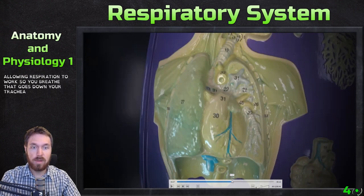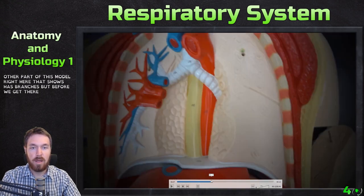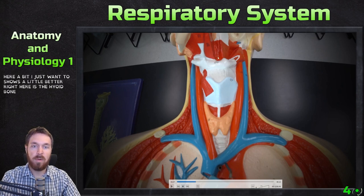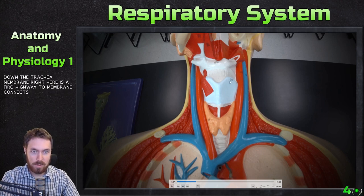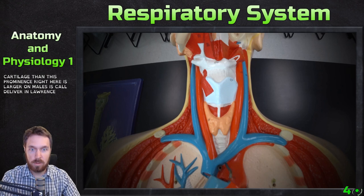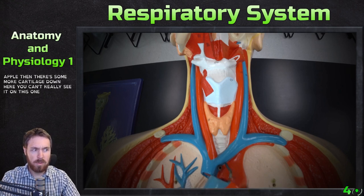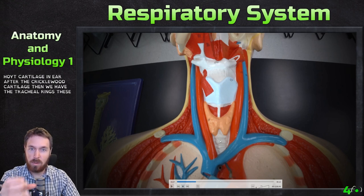Air you breathe in goes down your trachea and then through the different branches. The different branches are hard to see on this model so I'll use this other part. Right here is the hyoid bone; right above it is the epiglottis, that flap that stops food from going down the trachea. This membrane is the thyrohyoid membrane, connecting to the thyroid cartilage. That prominence is the laryngeal prominence, better known as the Adam's apple, which is larger in males. There's also a cricoid cartilage further down.